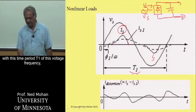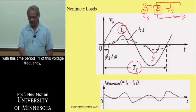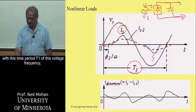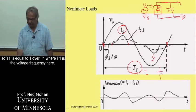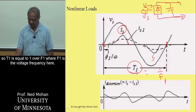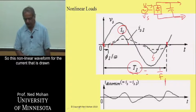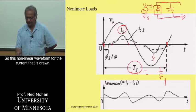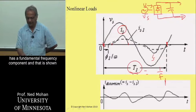So this is a non-sinusoidal current, but it's repeating with this time period T1 of this voltage frequency. So T1 is equal to 1 over F1, where F1 is the voltage frequency here.